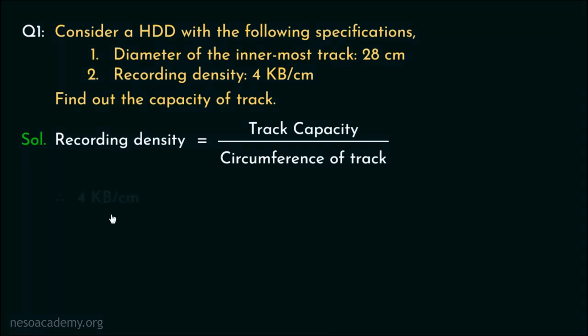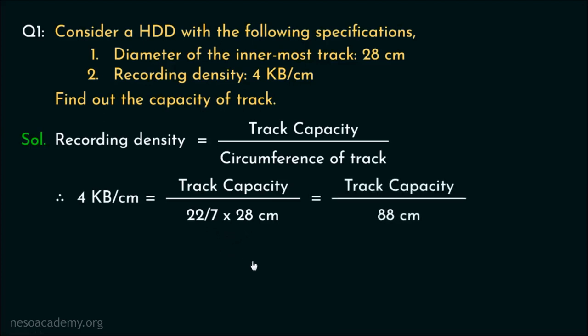Now the recording density is 4 KB per cm and the circumference of the track is pi d. Now pi is close to 22 by 7 and the diameter here is 28 cm. Now 7, 4 is a 28 and 4 into 22 is 88. Hence, the circumference is 88 cm.